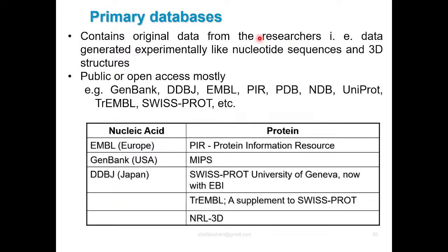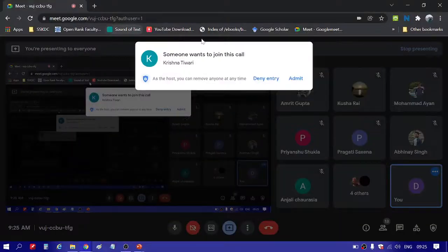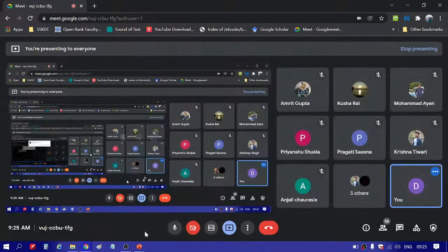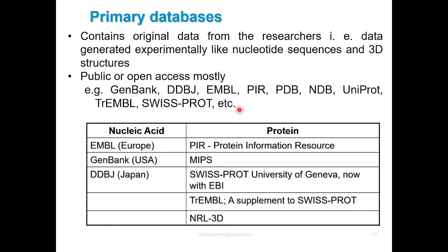You have a researcher who has generated data in their research. The raw data generated from experiments — like nucleotide sequences and 3D structures — is uploaded to primary databases. These databases are mostly public or open access.